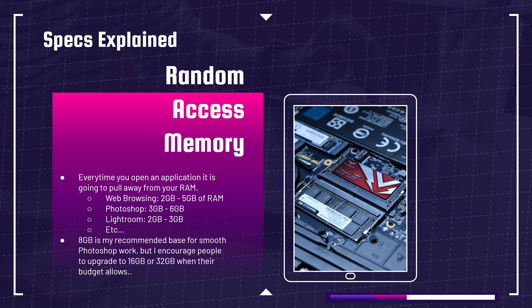If you want to deep dive on all the different intricacies, you can click or tap the screen. But just so we're all on the same page, RAM stands for Random Access Memory. Basically, how it works within your computer is every time you open a program, your RAM is going to pull from your RAM memory base. So let's say you have 8 or 16 gigs of RAM and you open up Google Chrome — you're going to use 2 to 5 gigs of that RAM.